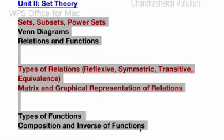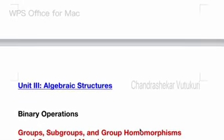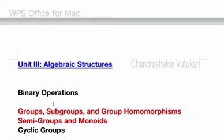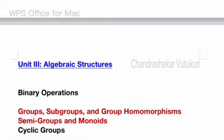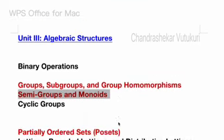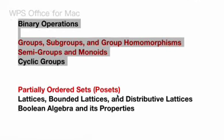As an average student, you are supposed to work out Unit 2 first. Now let's jump into Unit 3 — it's all about algebraic structures. Binary operations, groups, subgroups, and group homomorphism are said to be the topmost question this time. Semigroups and monoids are also said to be a topmost question that may occur in short as well as long. You may be getting one short question and one long question from this for sure.